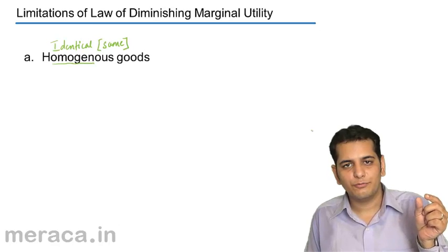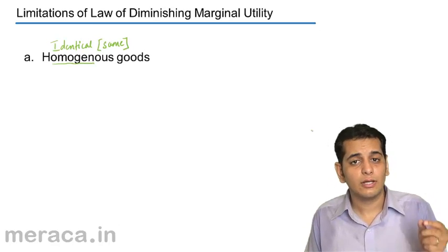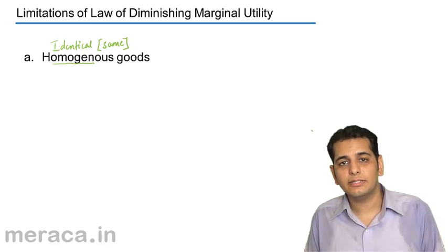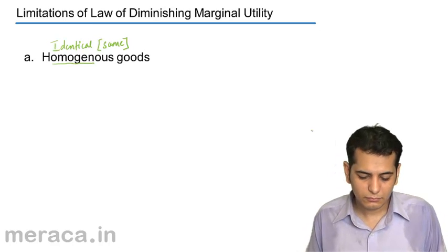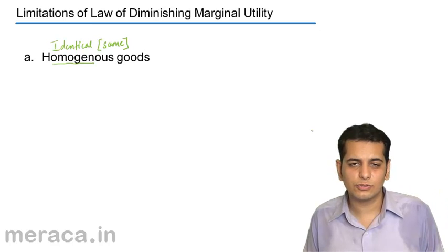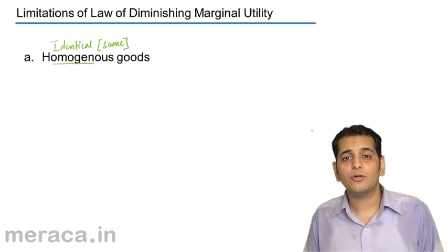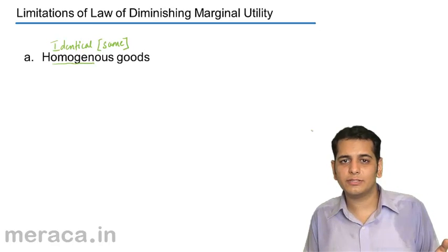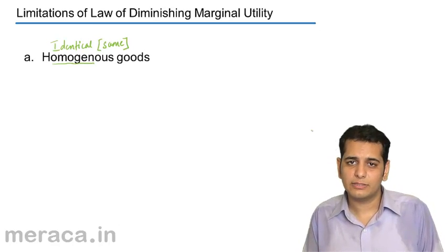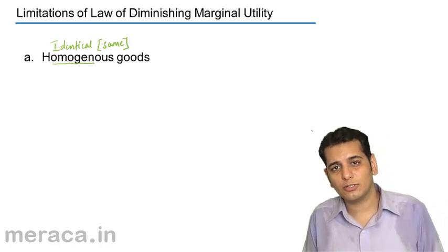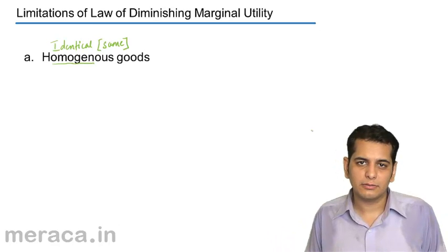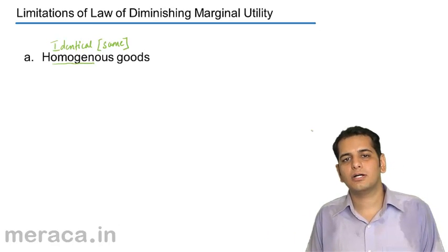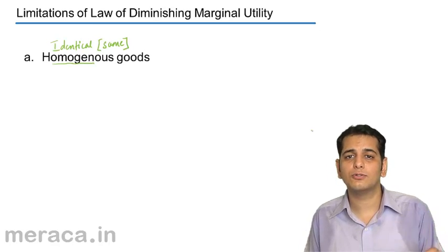If you consume chocolates, you need to consume the same brand, same flavor, and the other attributes also being the same. But if you consume other goods — that is, when the goods are not homogeneous — the law won't be applicable. Because when the goods are not homogeneous, you tend to derive different levels of satisfaction. So when you have a chocolate and then an ice cream, these two won't be comparable. For the law of diminishing marginal utility to operate, it is important that the goods are homogeneous.